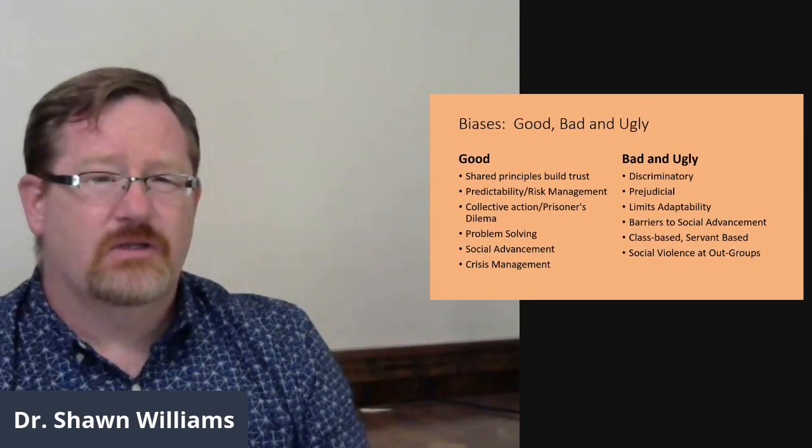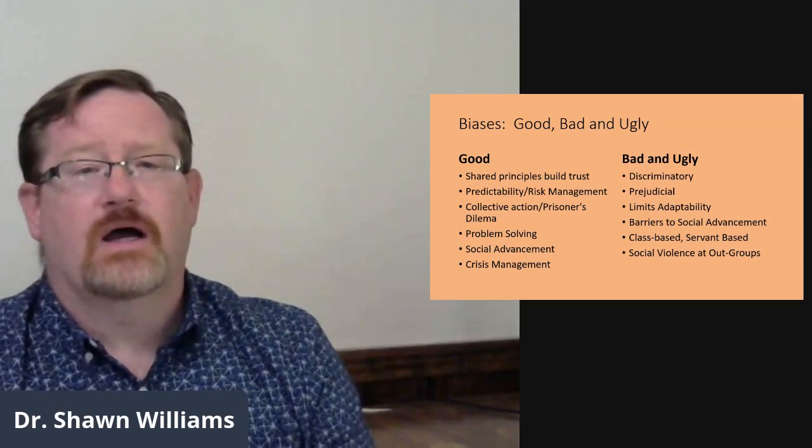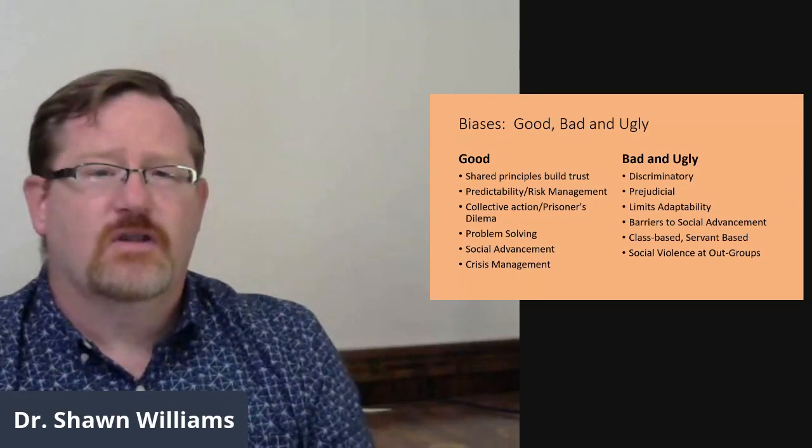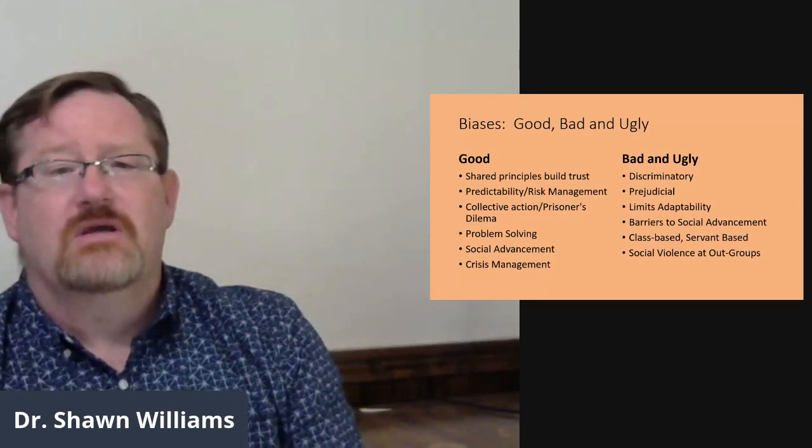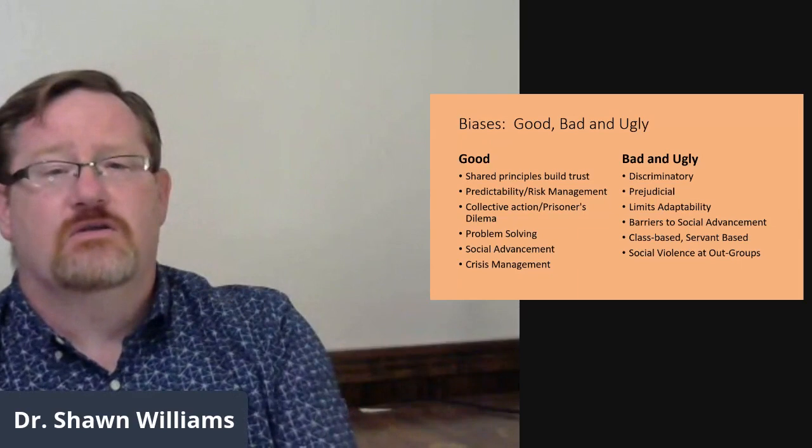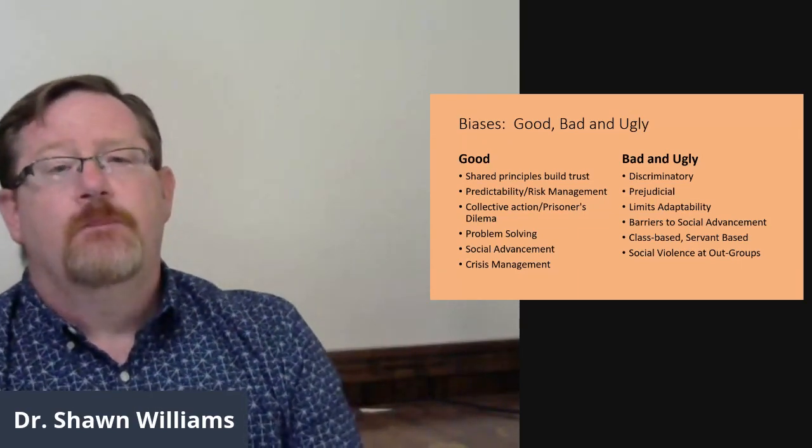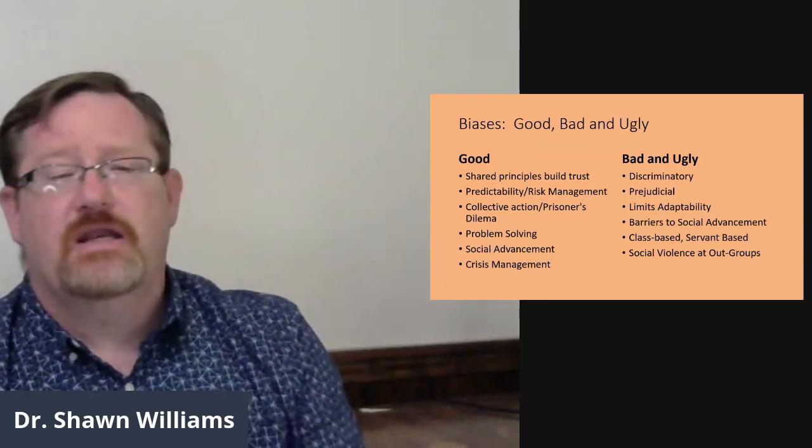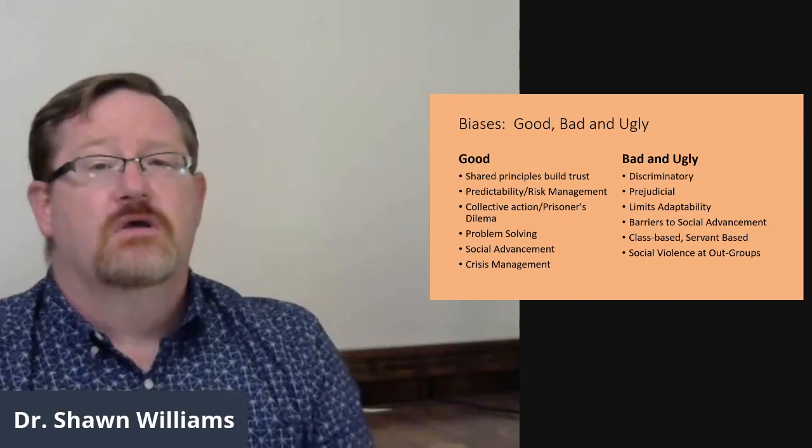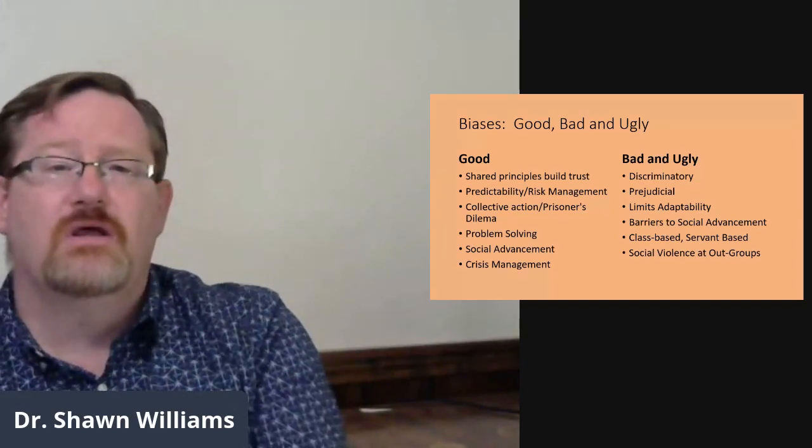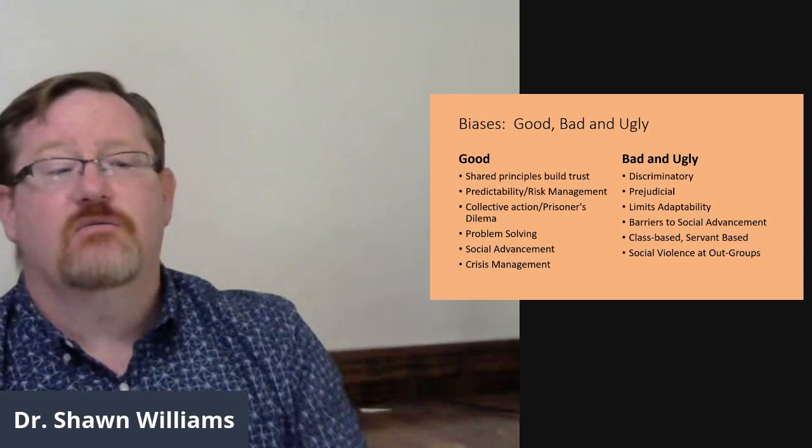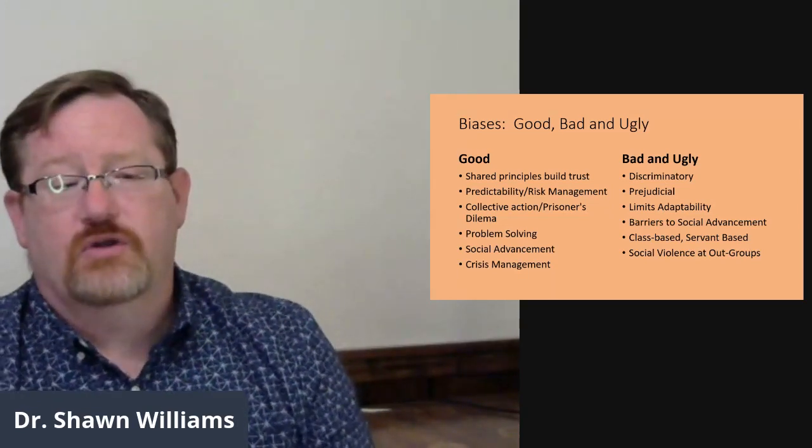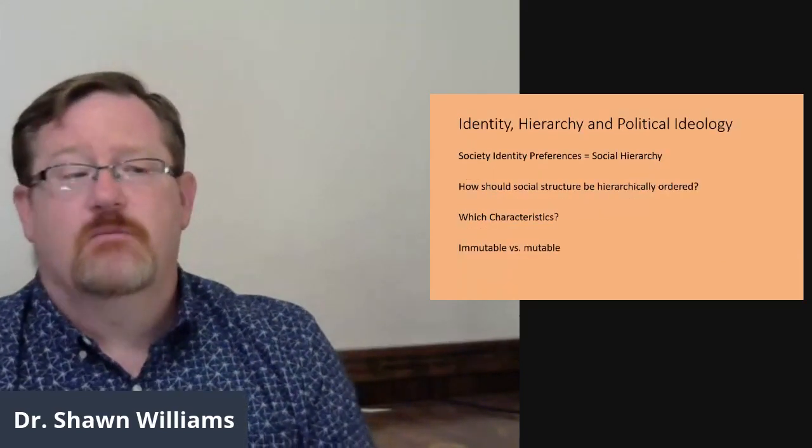This isn't necessarily an inherently bad thing, and here are a list of reasons why having shared identities in a society might be a good thing. It helps you to develop trust. It helps you to manage risk. Having common goals make it easier to try to problem solve or crisis manage. But taken too far, the use of identity through a ranked society can lead to things like discrimination or prejudice. It can make it harder for a person born into one level or rank in society to move to another rank in society, and this inability to move around could lead to things like social violence, especially among the outgroups.